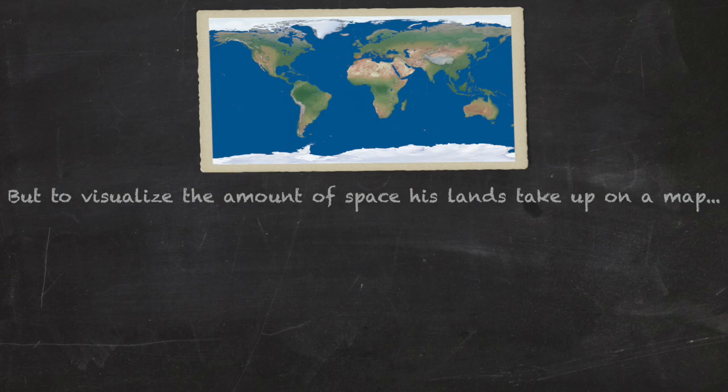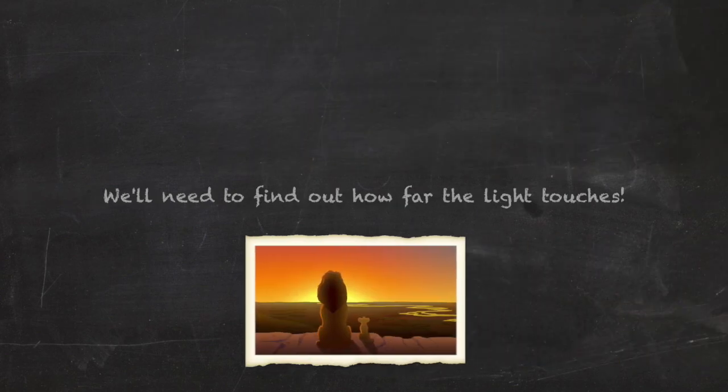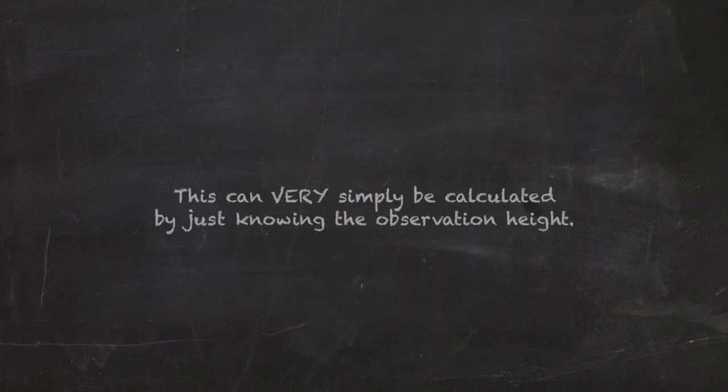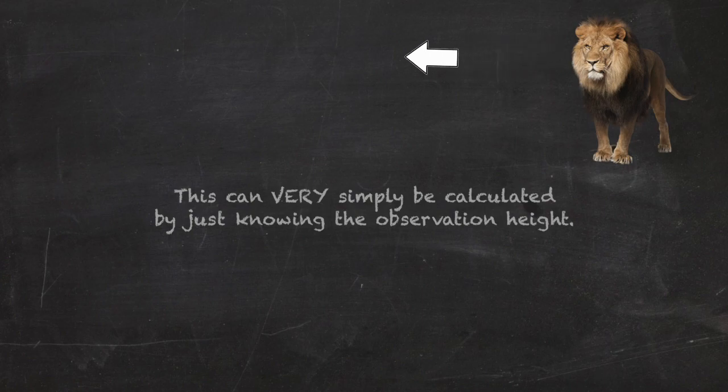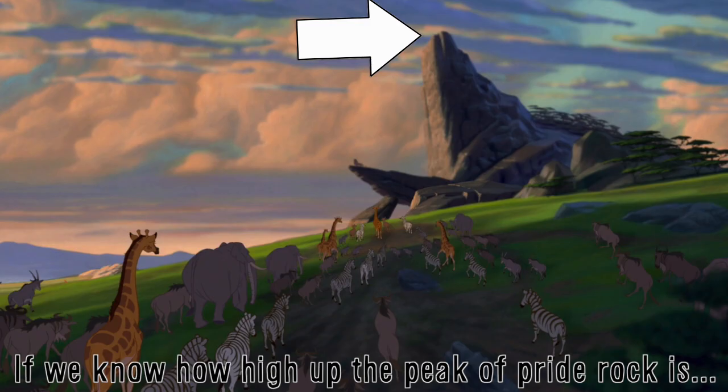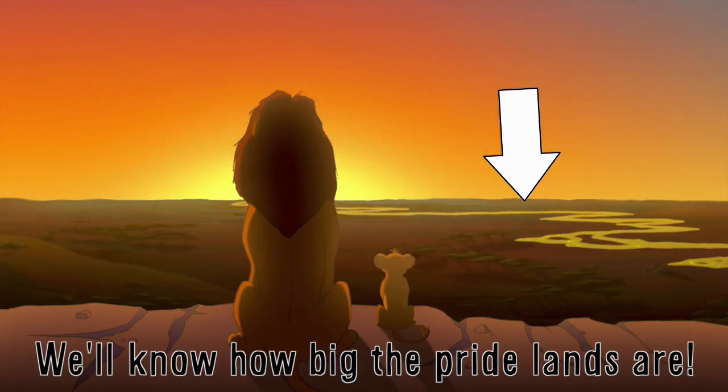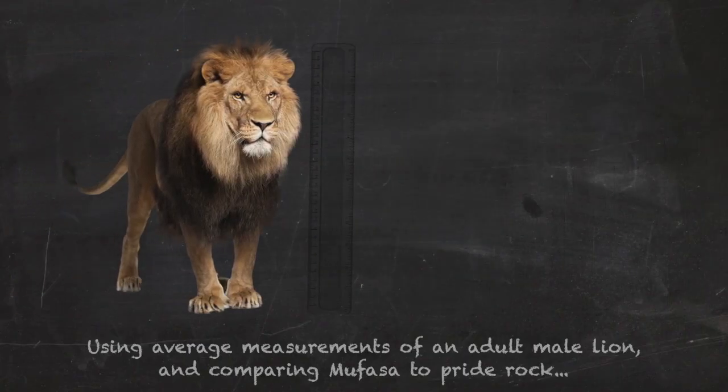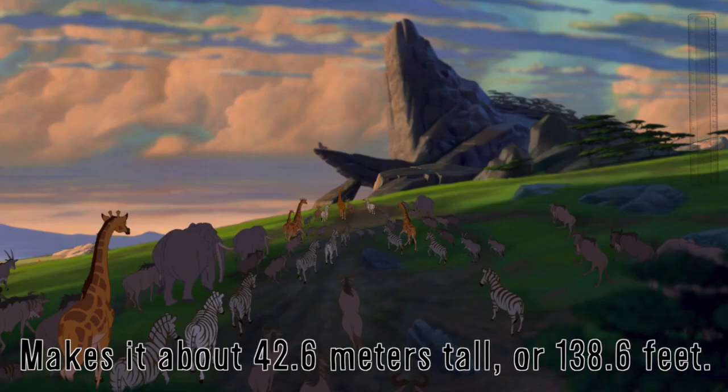But to visualize how much space the lands take up on a map, we'll need to find out how far the light touches. This can be calculated by knowing the observation height. So basically, if we know how high up the peak of Pride Rock is, we'll know how big the Pride Lands are. Using average measurements of an adult male lion and comparing Mufasa to Pride Rock makes it above 42.6 meters tall, or around 138.6 feet.